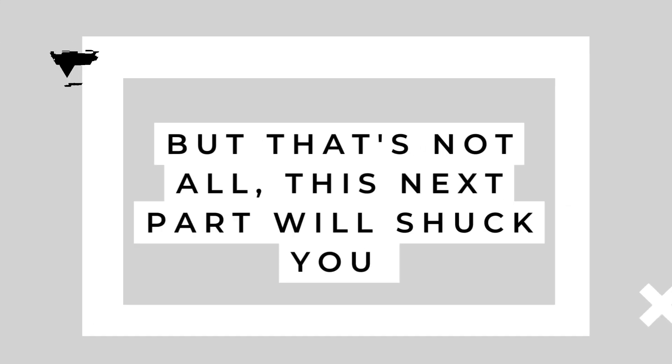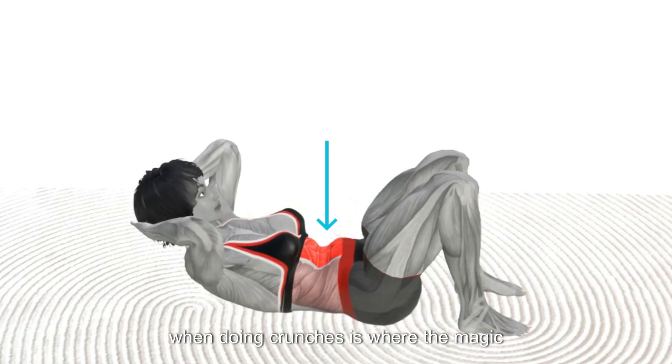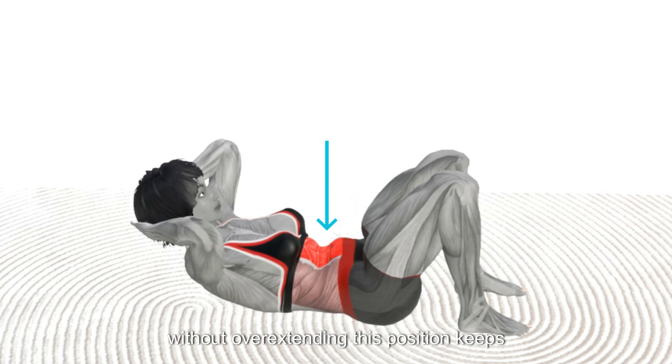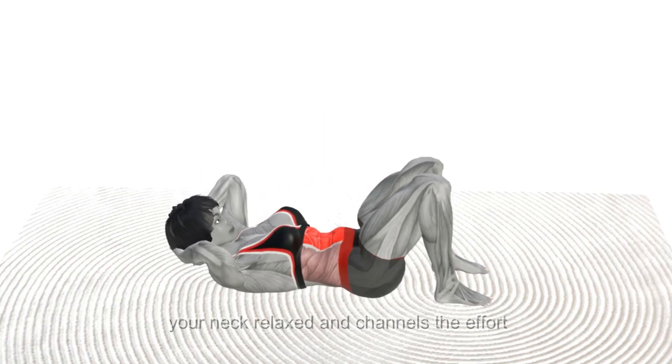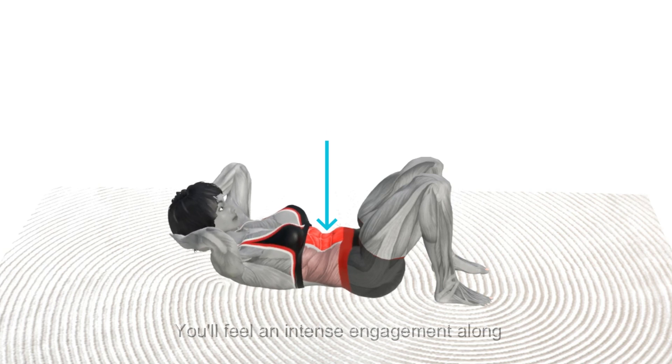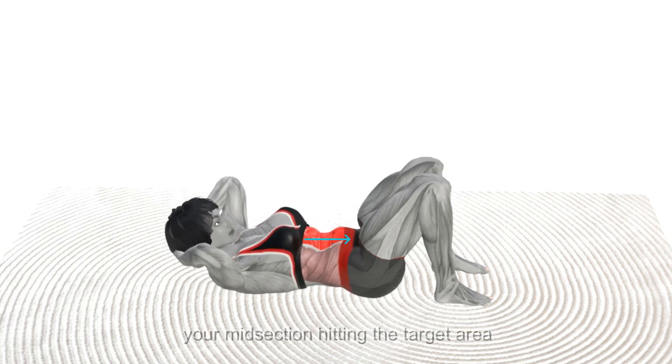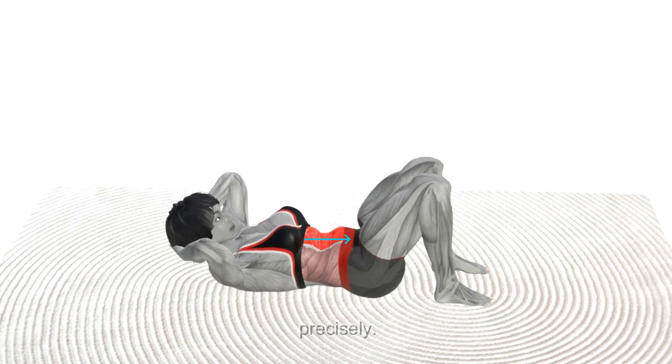This next part will shock you. At the peak of your movement when doing crunches is where the magic happens. Here, you get the maximum core engagement without overextending. This position keeps your neck relaxed and channels the effort directly into your core. You'll feel an intense engagement along your midsection, hitting the target area precisely.